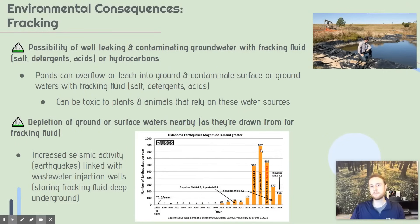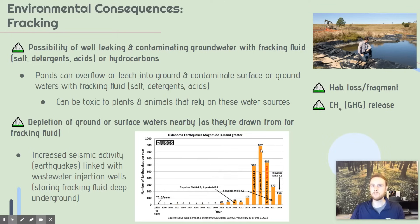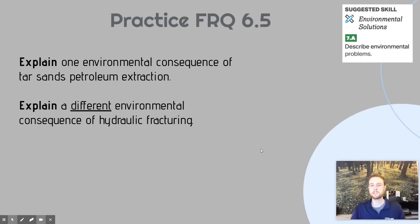A final consequence common to most fossil fuel extraction is habitat fragmentation or destruction. Specifically for fracking, because it's the extraction of natural gas, there's usually going to be methane release — important because methane is a very potent greenhouse gas, 84 to 86 times as warming as carbon dioxide, contributing quite a bit to climate change. For our practice FRQ for topic 6.5, try explaining one environmental consequence of tar sand petroleum extraction, and a different environmental consequence of hydraulic fracturing.